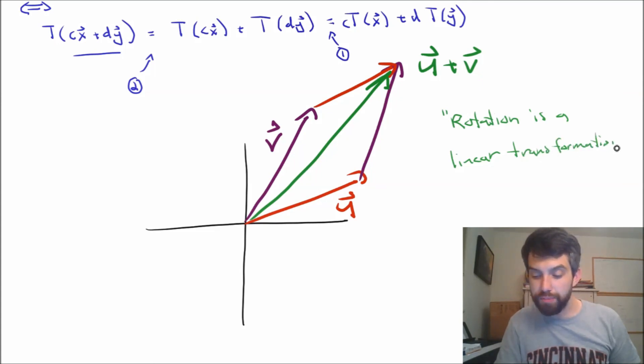And you might have the objection that rotation has something to do with circles, and circles aren't lines, and linear has the word line in it. But try not to get too bogged down in that, because what we're defining as a linear transformation here is one in which the sum of two things goes to the transformation of both of the individual things added up together. And, indeed, rotation obeys that property.